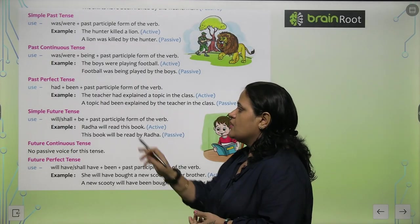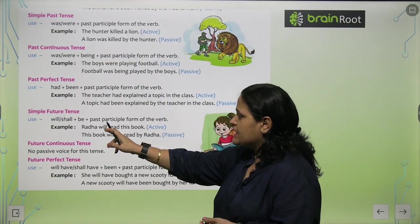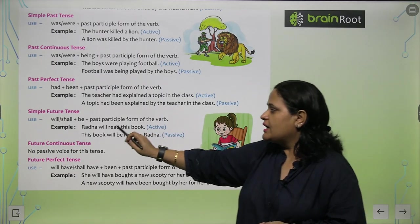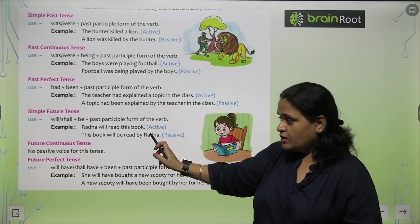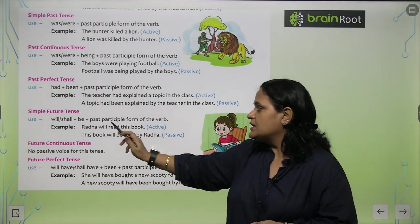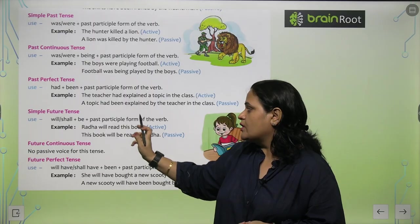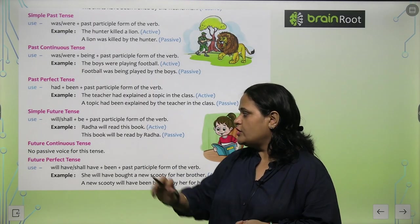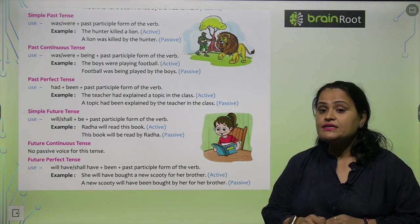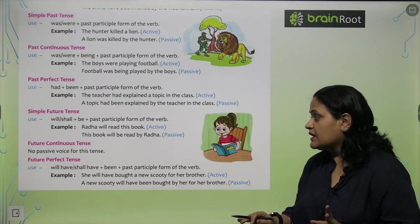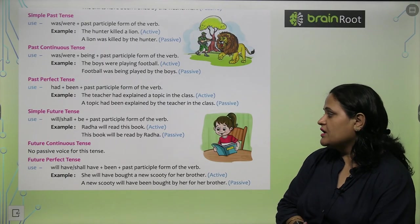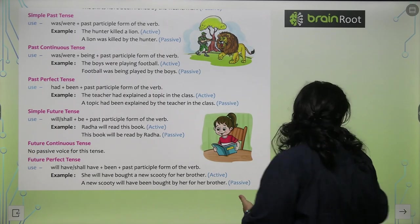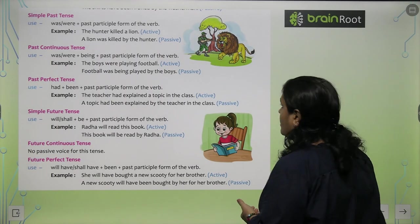Simple Future tense: will/shall be plus Past Participle — 'Radha will read this book' becomes 'This book will be read by Radha.' Future Continuous mein koi Passive Voice nahi banta. Future Perfect mein: will have/shall have been plus Past Participle form of the verb.